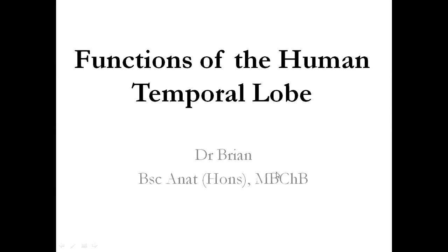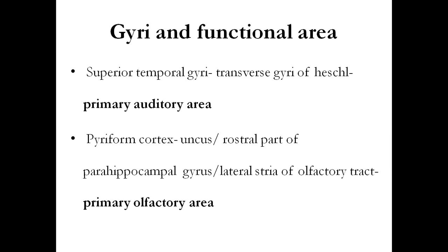Welcome back to my channel. Today we are discussing the functions of the human temporal lobe. The superior temporal gyrus houses the transverse gyrus of Heschl, which is the primary auditory area that allows you to perceive auditory information at the cortical level. The piriform cortex, made up of the uncus, the rostral part of